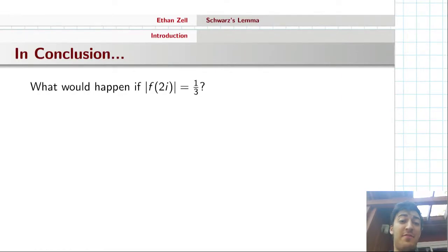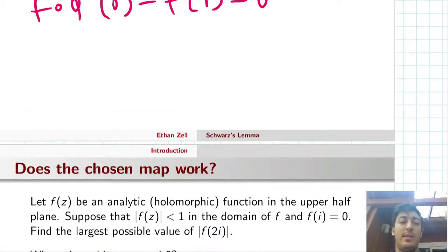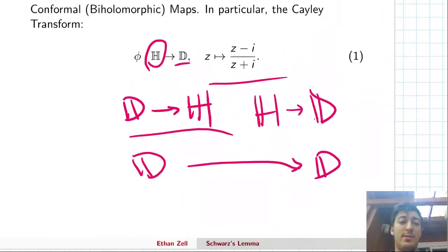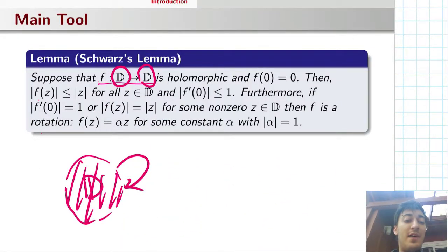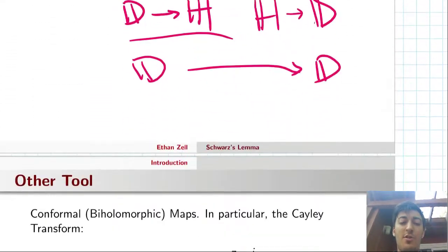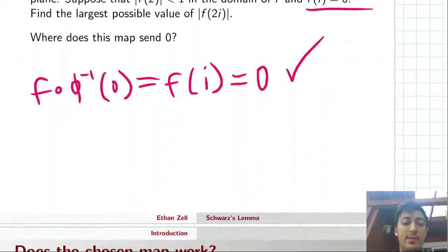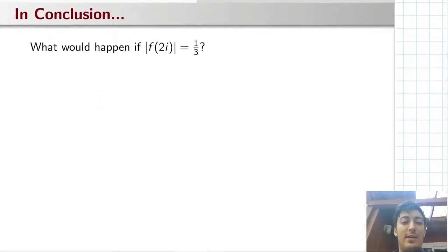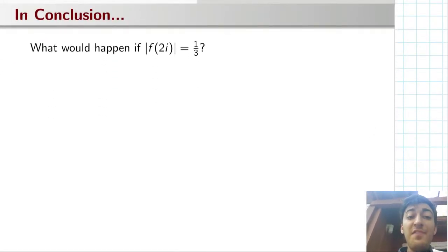So let's pretend, what if this modulus |f(2i)| was equal to one third? Well, let's look back at Schwarz's lemma and see what that tells us. So then if either of these things are true, then there is some nonzero—for any nonzero z in the disk, then f is a rotation, which is a pretty strong thing. So let's take a look at what happens if that's actually true.